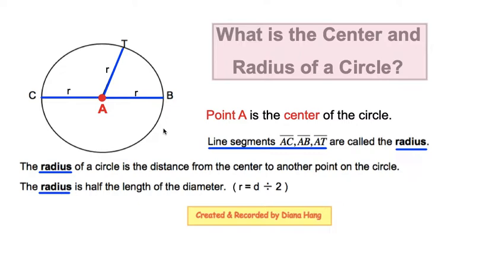Over here, you have a picture of your circle, and letter A, or point A, is called the center of the circle, which is the middle of your circle.